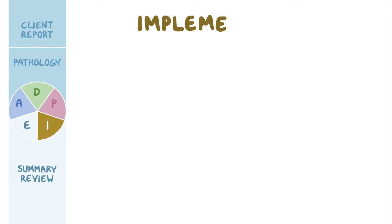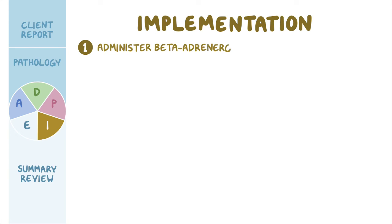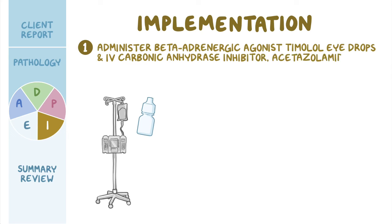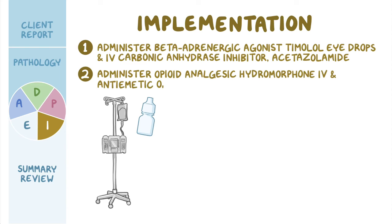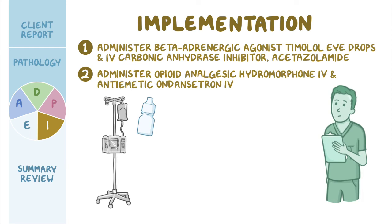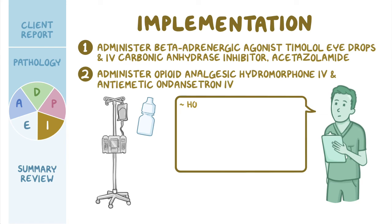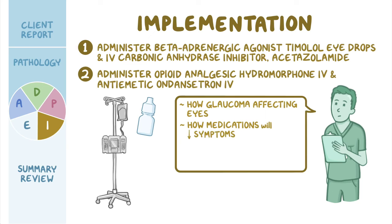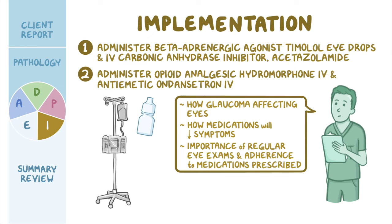It is time to implement your plan of care. You administer the ordered beta-adrenergic antagonist timolol eye drops and the IV carbonic anhydrase inhibitor acetazolamide. Then you administer the opioid analgesic hydromorphone IV and the anti-emetic ondansetron IV. While you administer the medications, you teach her about how glaucoma is affecting her eyes and how the medications will help decrease her symptoms. You stress the importance of regular eye exams and adherence to prescribed medications.